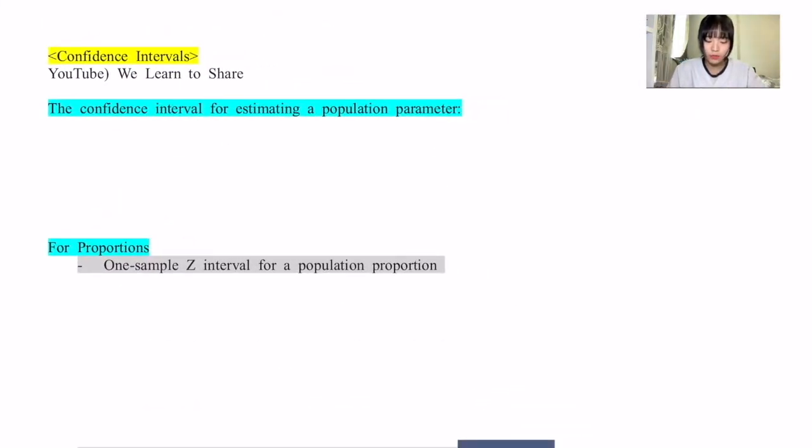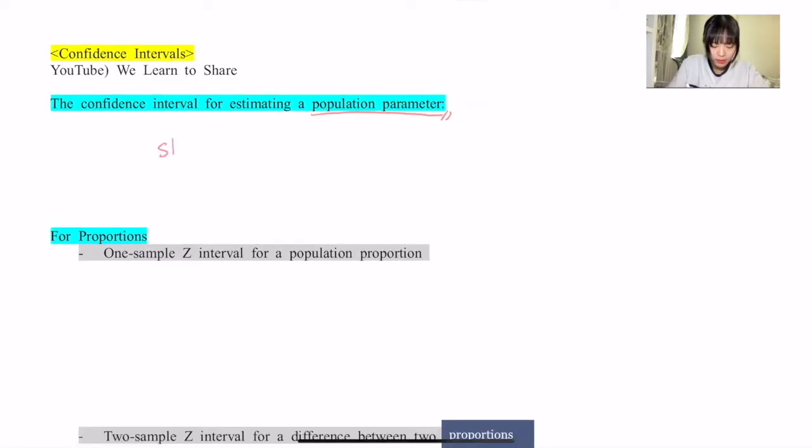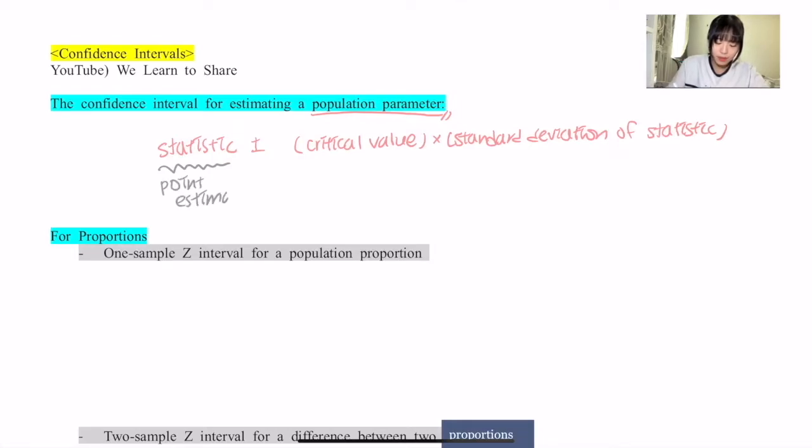How do you get the confidence interval for estimating a population parameter? This is the general formula you're going to use to compute confidence intervals for proportions and means: statistic ± critical value × standard deviation of statistic. You should memorize that this statistic is called a point estimate, and this value is equal to the margin of error.